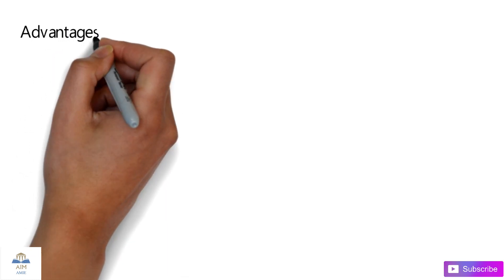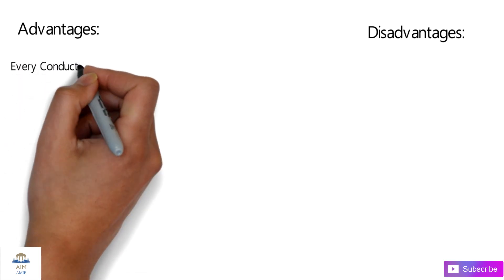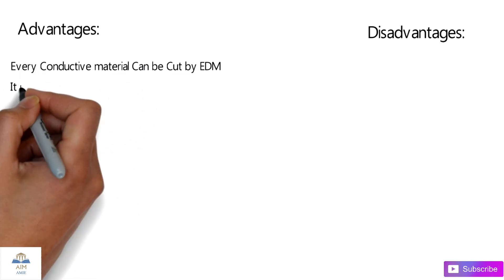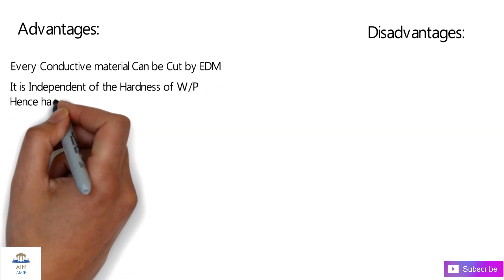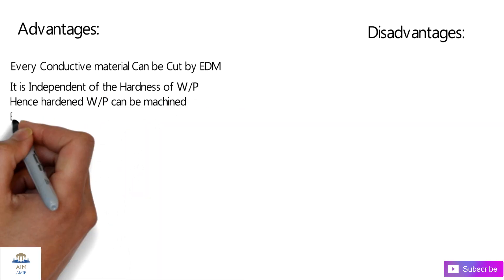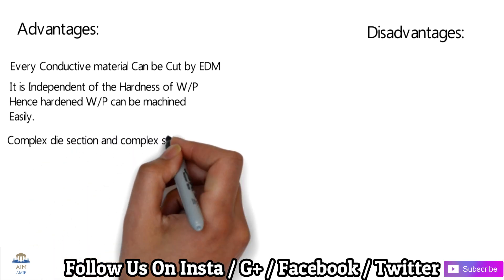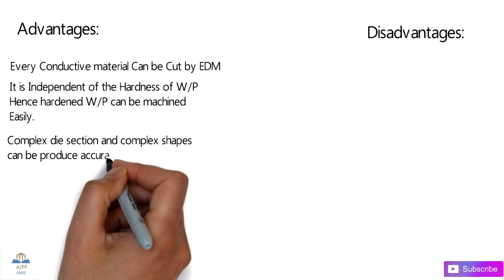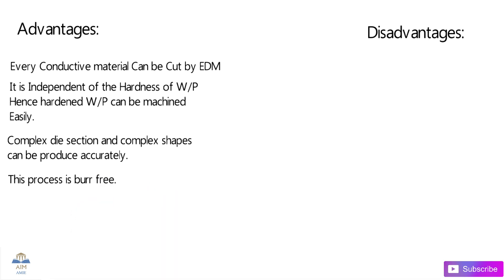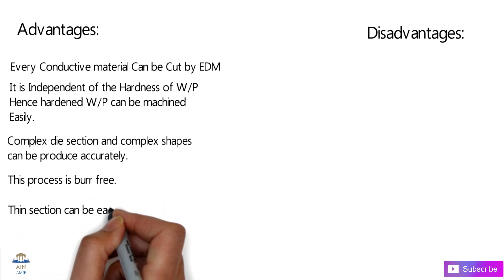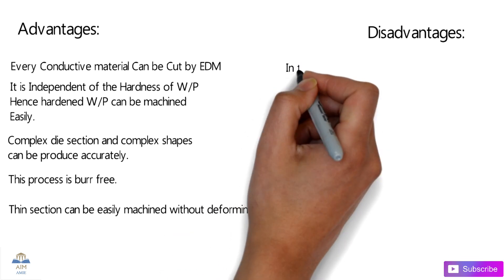Advantages of EDM: every conductive material can be cut by EDM and it is independent of workpiece hardness, so hardened workpieces can also be machined easily. Complex shapes can be easily machined with high accuracy. This process is burr-free with very small chip formation. Thin sections can also be easily machined without deforming the part.